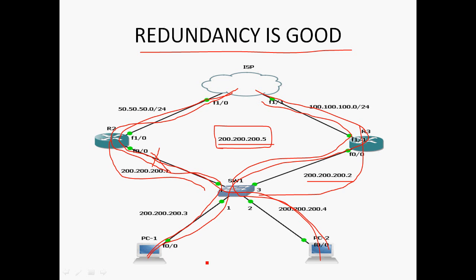How does the client switch over? The client does not switch over directly. In the PC we assign the virtual IP address as the default gateway — only the gateway changes over. Normally the PC sends a broadcast ARP request for the default gateway. The active router does not send its physical MAC address of the fast ethernet 0/0 interface. Instead, it creates a virtual IP and automatically creates a virtual MAC address. That virtual MAC address is sent to PC1 and PC2. So if R2's link goes down, it automatically switches over to R3 router and communicates to the ISP.